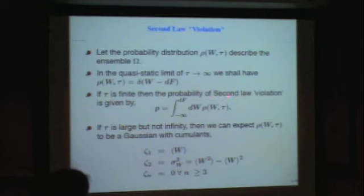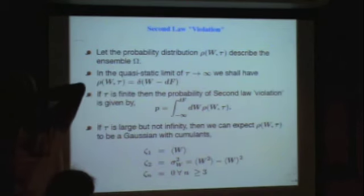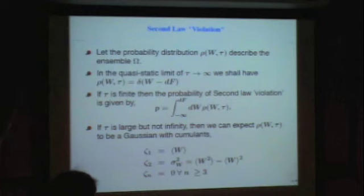If τ is finite, then the probability of the second law violation is given by integral of this density function over minus infinity to plus Δf. That means I am going to look at the ensemble of experiment that I have done and I am going to carefully note down the work that has been measured in each of these experiments. I am going to look at those work values which are less than the reversible work and I am going to say that these are the scenarios in which second law is violated.